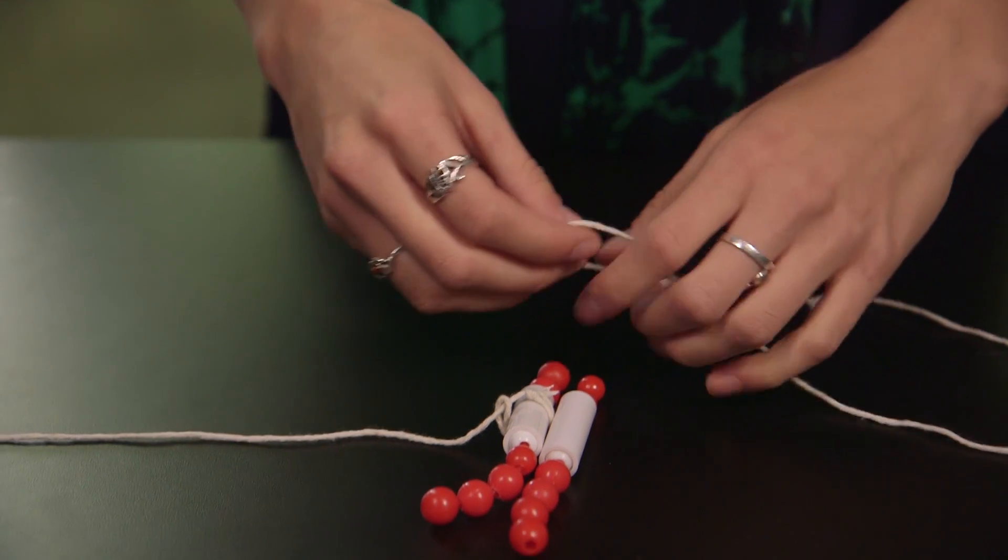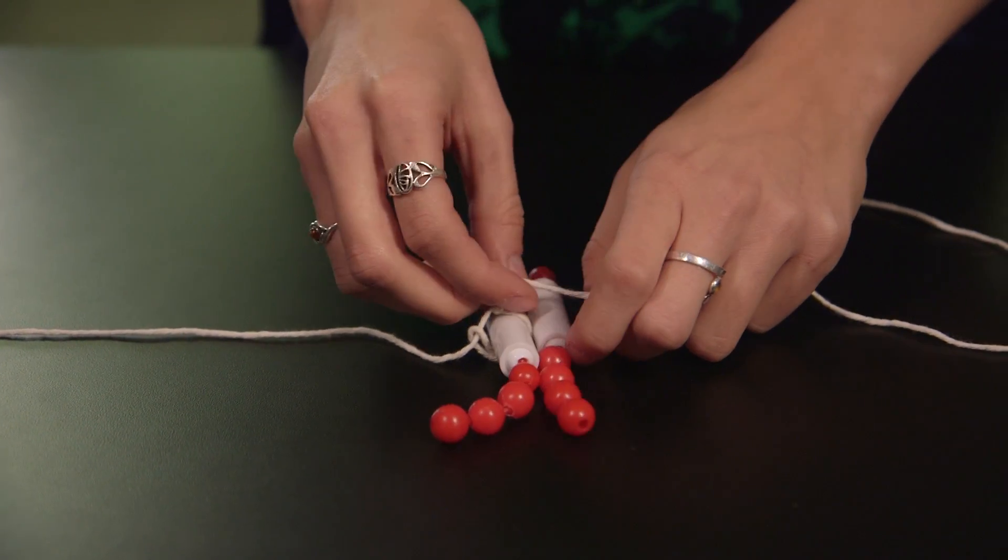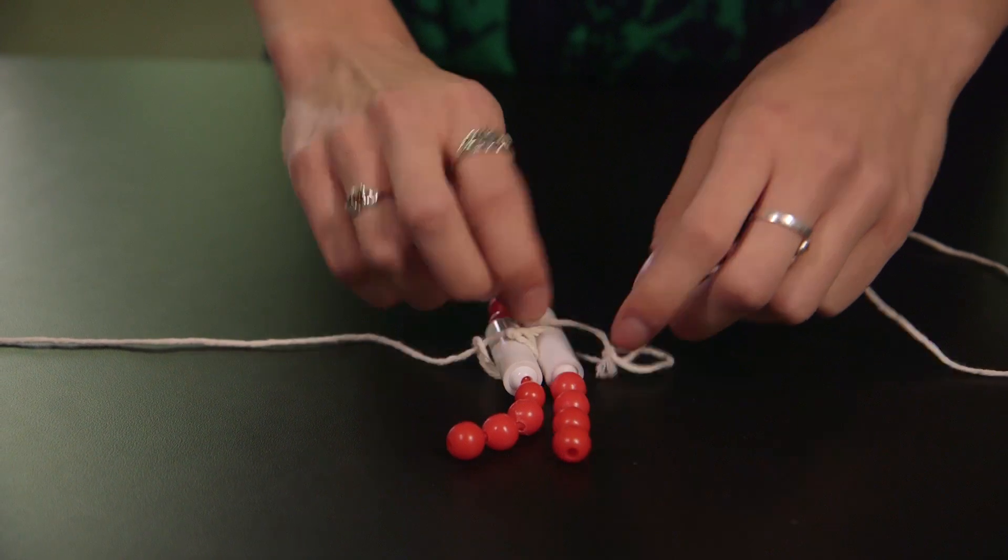In our activity, we will use a string to represent the spindle fibers. In order to loop the string around the centromere, pull the string through the loop to tighten it around the centromere. Attach strings in the same way to each centromere of a replicated chromosome.